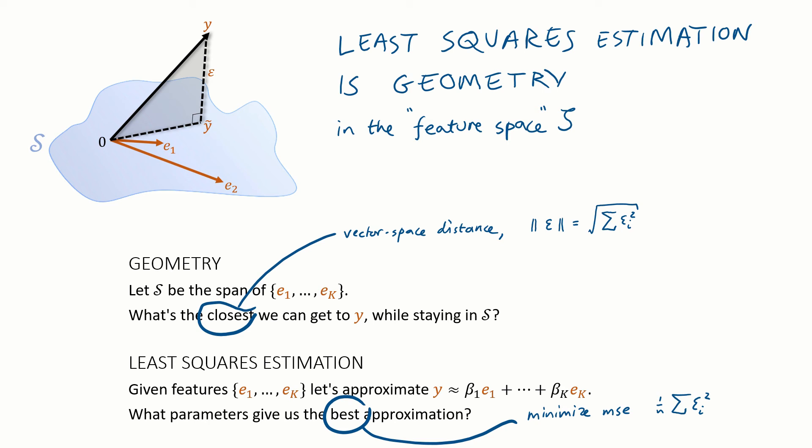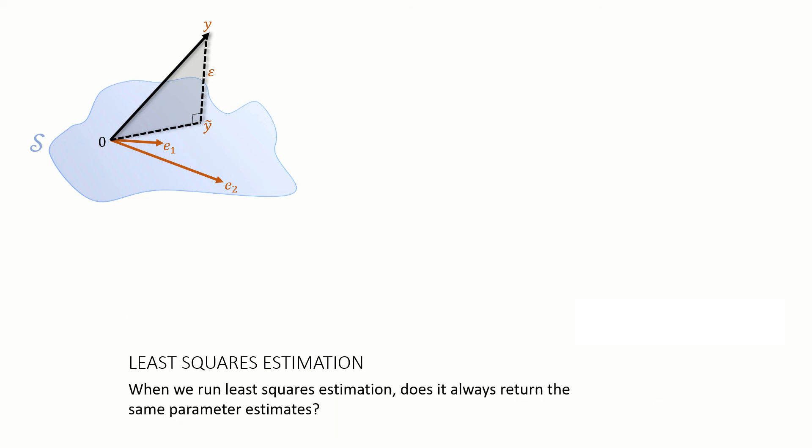So now we can tie together the two threads that we've been talking about in this video. In the first half we were talking about linear independence in a geometrical linear algebra sense. Let's link that, see what it has to say about least squares estimation and linear models.